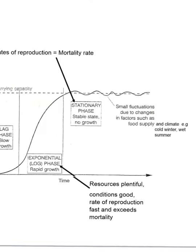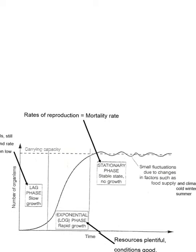Lastly, our final stationary phase. The stationary phase is a stable state of no growth, where the rate of reproduction equals the rate of mortality — birth rate equals death rate. It usually stops at what we call the carrying capacity of the environment, which is the maximum population size that an environment can support. This will generally show small fluctuations due to changes in factors such as food supply and climate. For example, if there's a cold winter, there won't be much food availability, causing a decrease in the population. However, if there's a good hot summer, more individuals could survive, therefore increasing the population slightly.